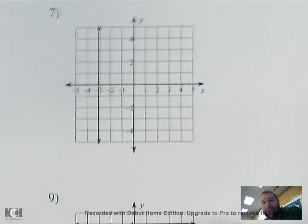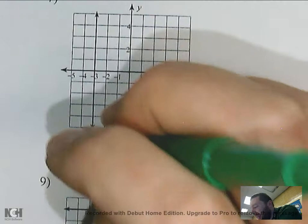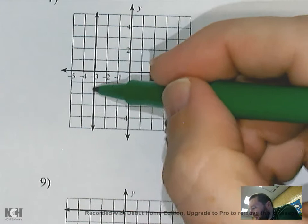This is a vertical line — one of my special cases. We already talked about what horizontal lines look like. A vertical line has undefined slope. That is going to be an x equals equation — you look at what x value is the only x value on that line.